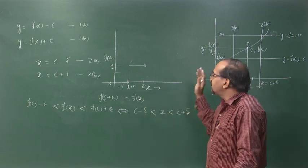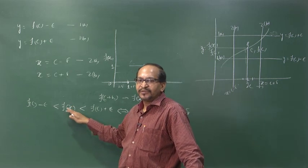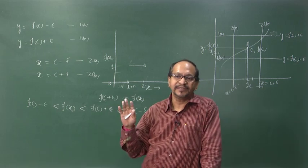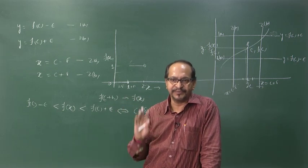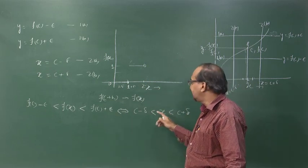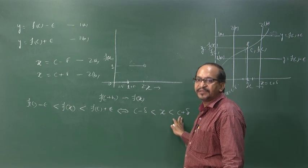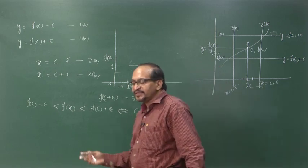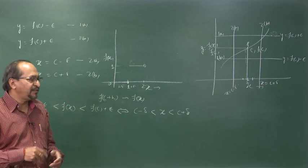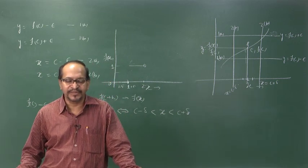The function is continuous at c provided the function value lies between f(c) minus epsilon and f(c) plus epsilon, where epsilon is any preassigned arbitrary positive number, and there must exist a positive delta such that x lies between c minus delta and c plus delta. This is the intuitive definition of a continuous function — we shall discuss a more mathematical definition later.